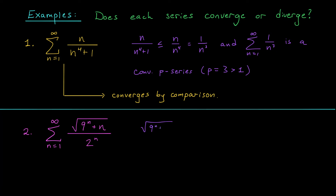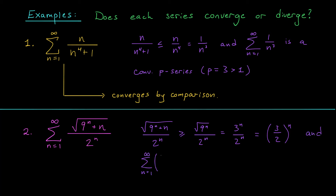If we remove the n term, the numerator becomes smaller, so the expression √(9ⁿ + n) / 2ⁿ is bigger than or equal to √(9ⁿ) / 2ⁿ. The square root of 9 is 3, so this simplifies to 3ⁿ / 2ⁿ, or equivalently (3/2)ⁿ. We found a simpler expression that's a little bit smaller than the one we're working with. If we can show that the sum of these terms is divergent, then our larger sum must also be divergent. This is a divergent geometric series with ratio 3/2, which is bigger than one in absolute value. So by comparison, our series must also be divergent.